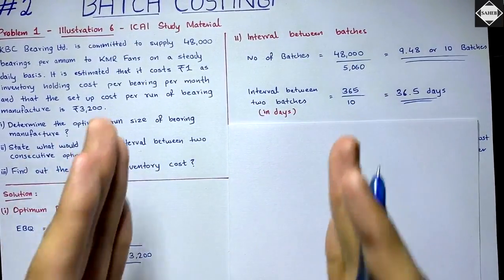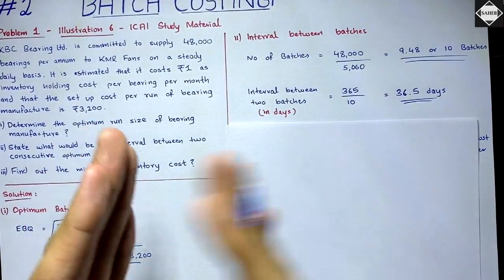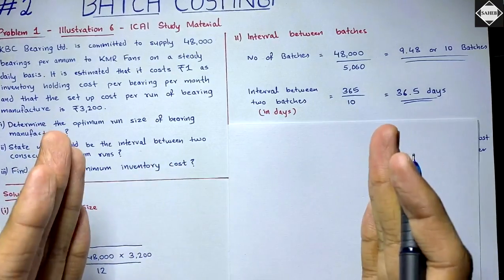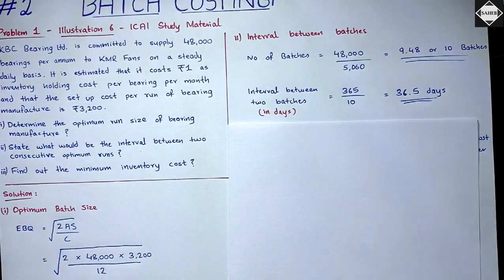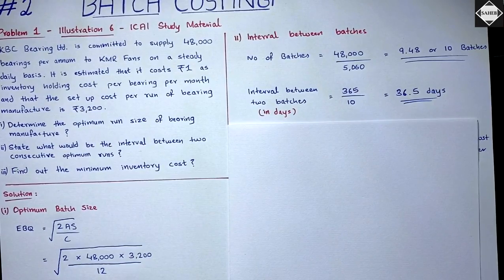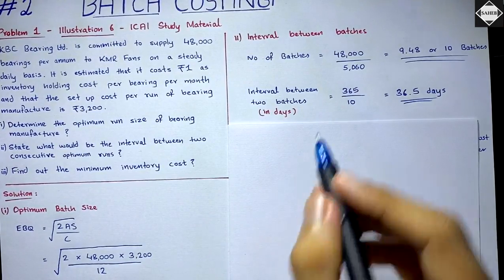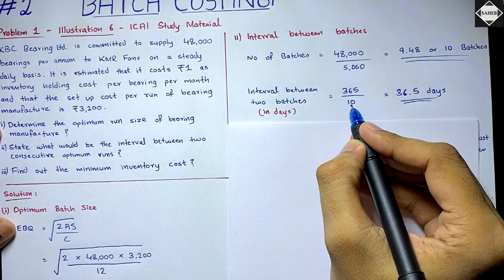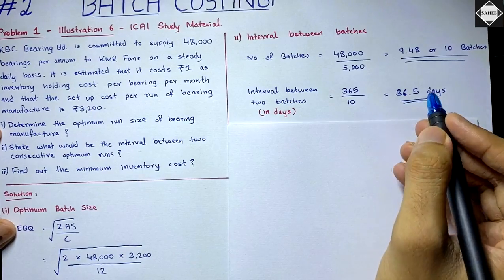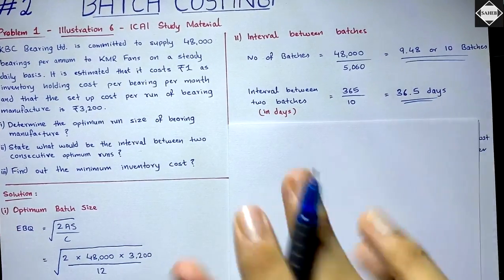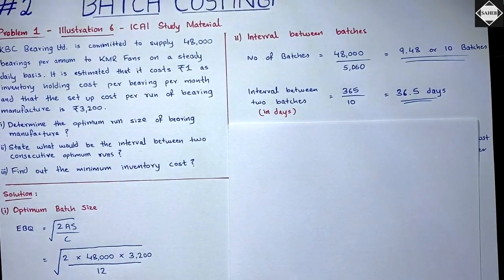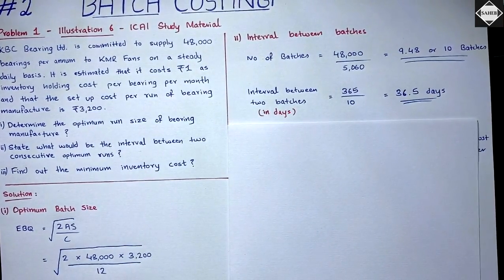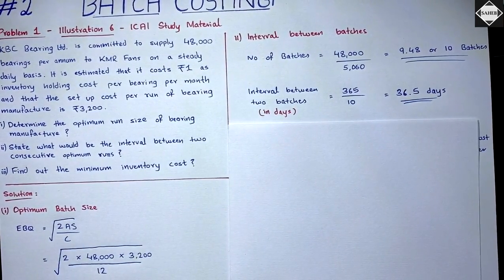So the gap between two batches is 37 days. We first calculated the number of batches, then divided the total days in a year by 10 to get the interval between batches.